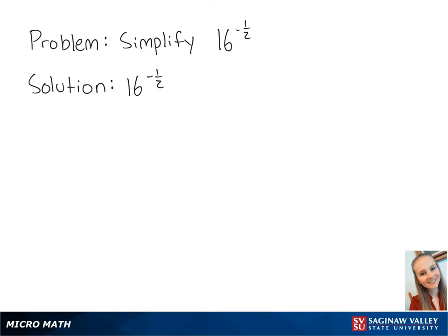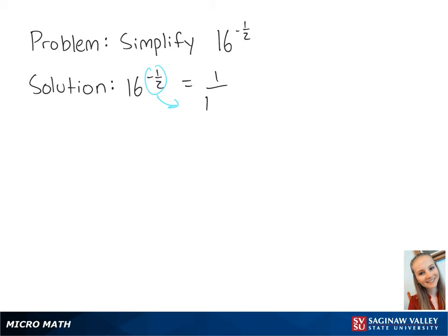Let's simplify 16 to the negative half power. A negative exponent becomes positive when put in the denominator, which gives us 1 over 16 to the 1 half power.